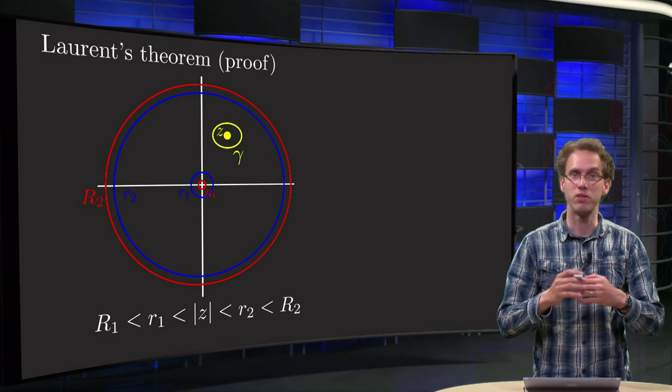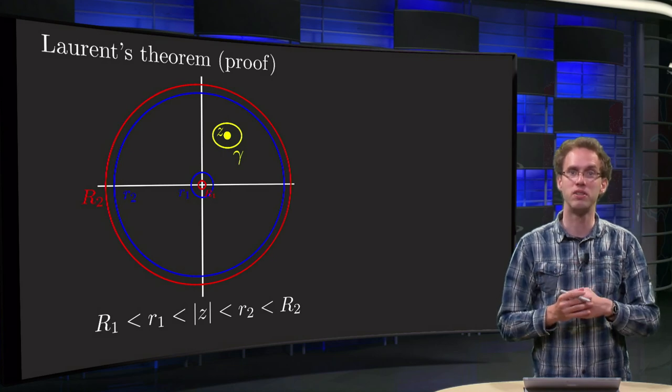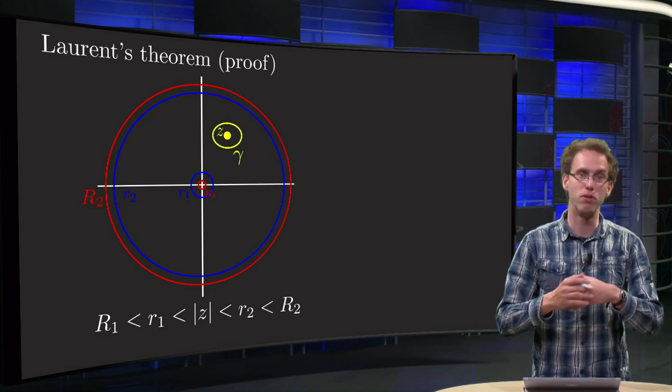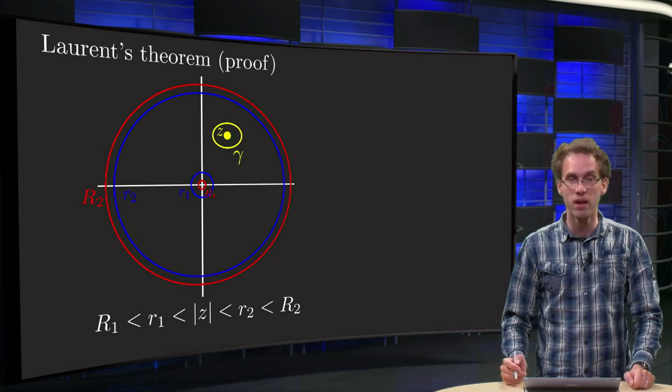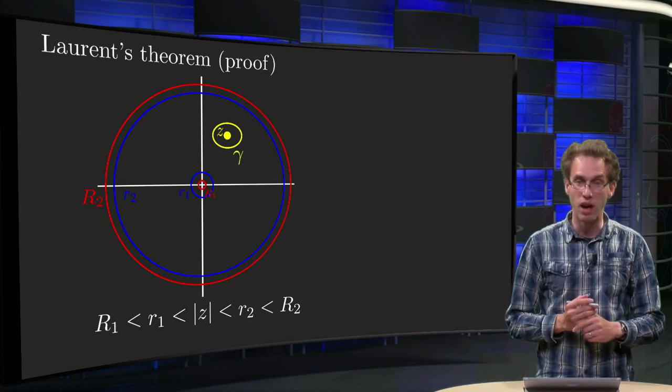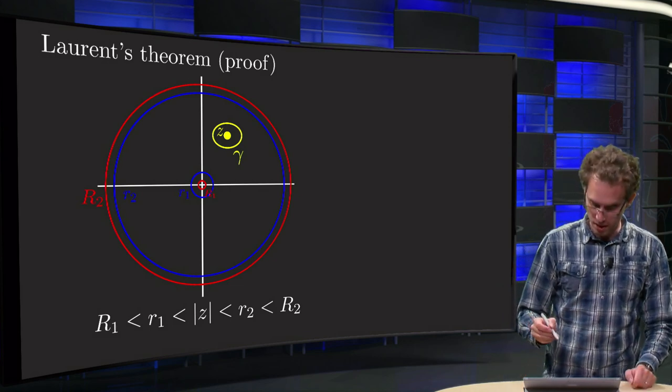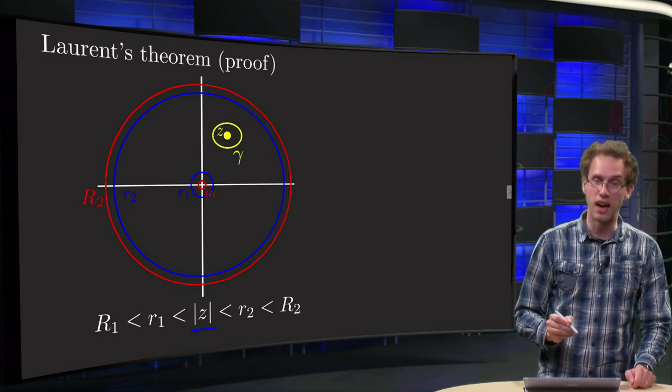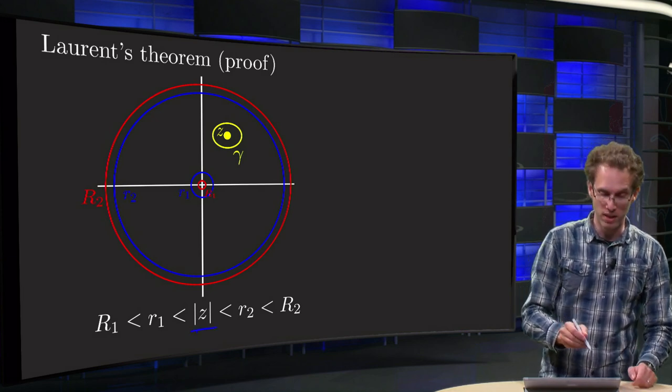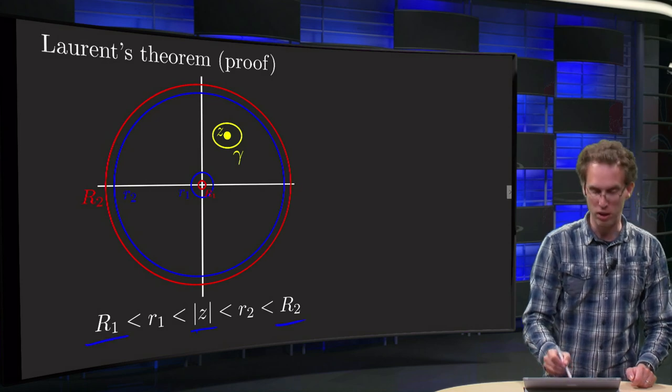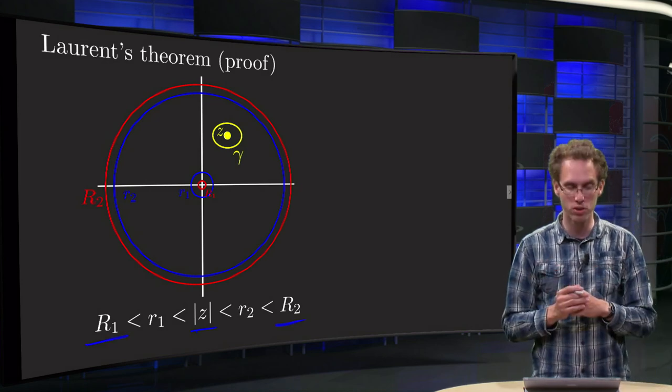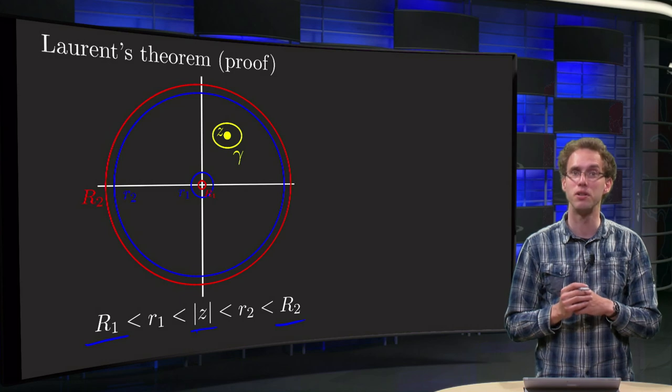As our z0, we will take 0 just to make the notation a bit easier, but the proof holds in general of course. So what's the construction? We know that our f is analytic between R1 and R2, capital R1 and capital R2, so the red circles in the figure.